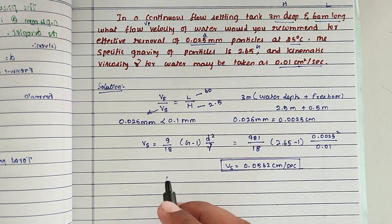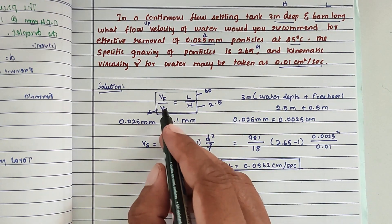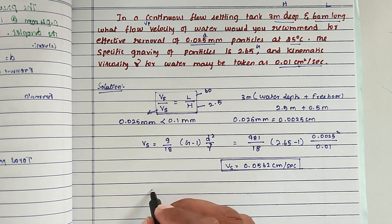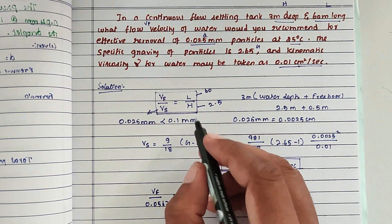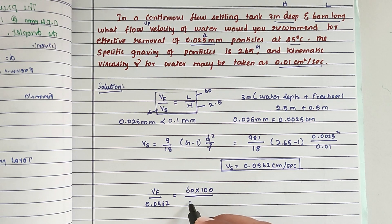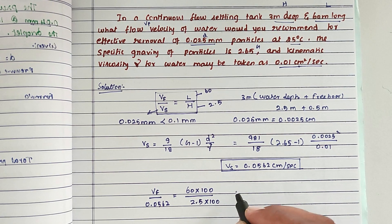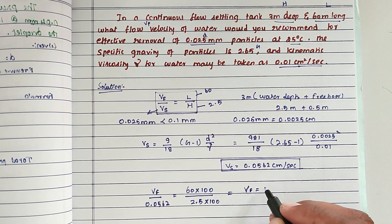Now substituting into the formula Vf / Vs = L / H: flow velocity Vf divided by 0.0562 equals 60 meters (converted to 6000 cm) divided by 2.5 meters (converted to 250 cm). Solving, the only unknown is Vf, which gives a flow velocity of 1.35 centimeters per second.